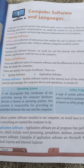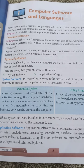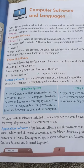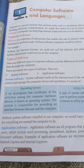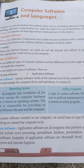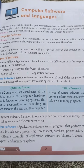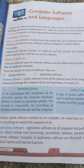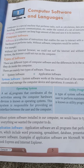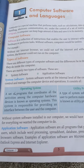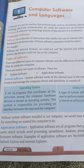Everybody knows computer is an electronic machine — it is a machine. We have computer software and hardware. Types of software are there. Computer software is a collection of instructions. These are some type of instructions that enables the user to interact with the computer. Who is using the computer? That is called the user.